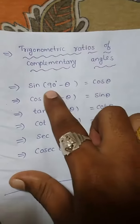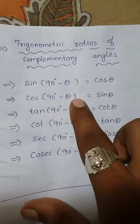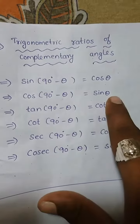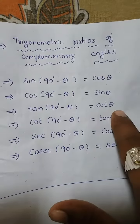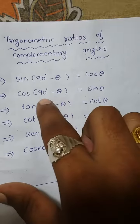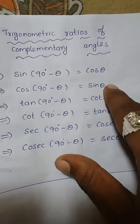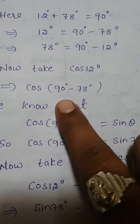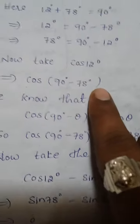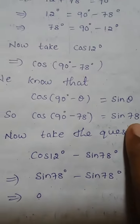From trigonometric ratios of complementary angles: sin of 90 minus theta is nothing but cos theta; cos of 90 minus theta is nothing but sin theta; tan of 90 minus theta is nothing but cot theta. Here I am using cos of 90 minus theta is nothing but sin theta.